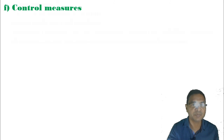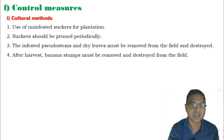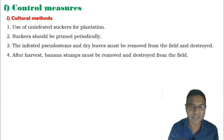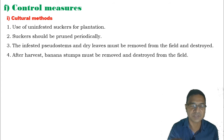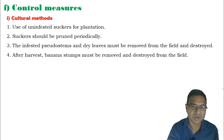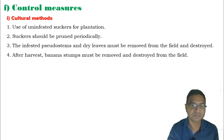To control this pest, cultural methods include: using uninfested healthy suckers for plantation; pruning suckers periodically; removing infested pseudostems and dry leaves from the field and destroying them, as they may harbor developmental stages or adults; and after harvesting, removing and destroying banana stumps from the field.